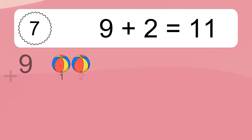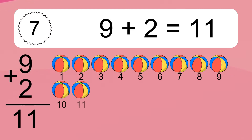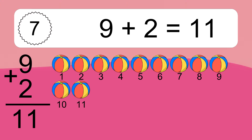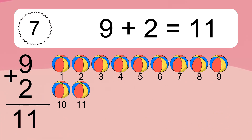9 plus 2 equals what? 9 plus 2 equals 11. Let's count it: 1, 2, 3, 4, 5, 6, 7, 8, 9, 10, 11.